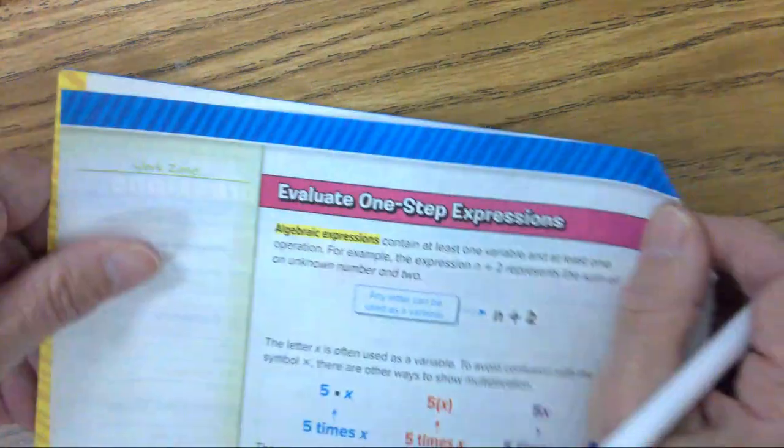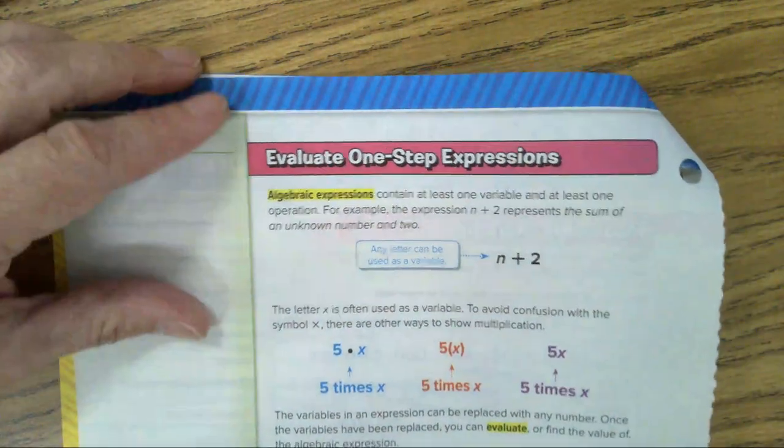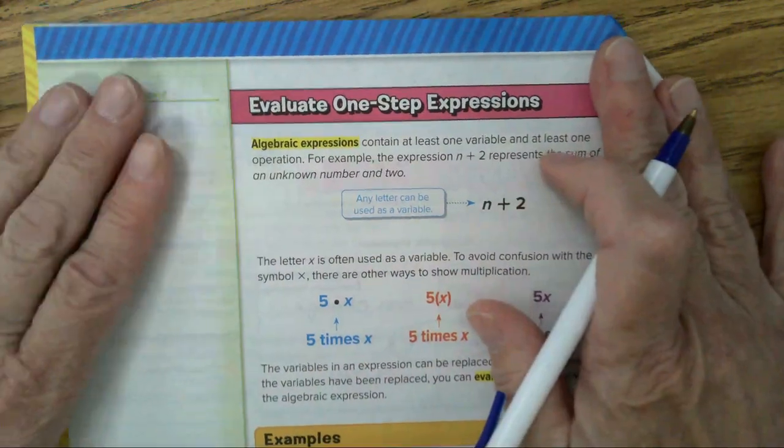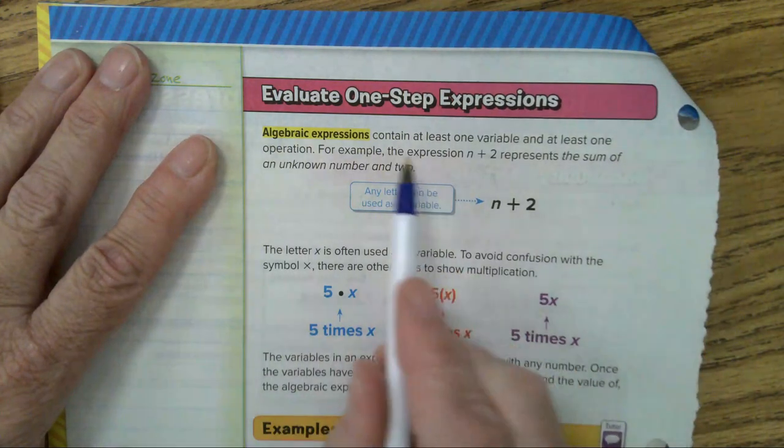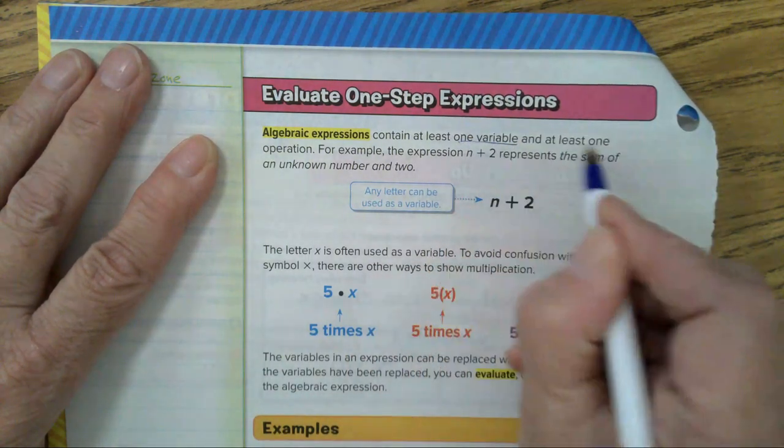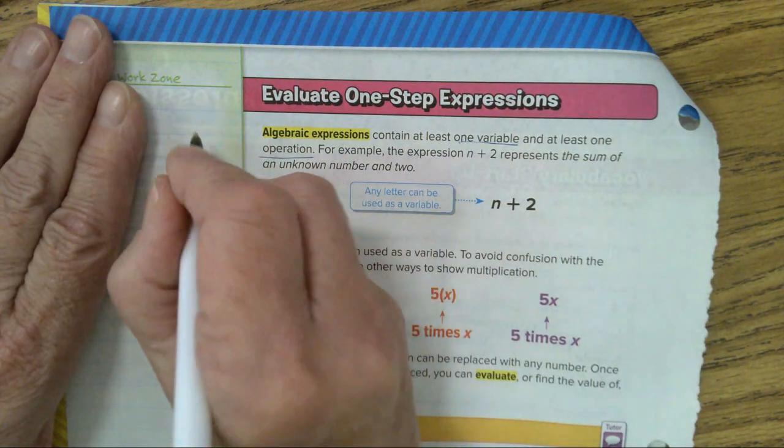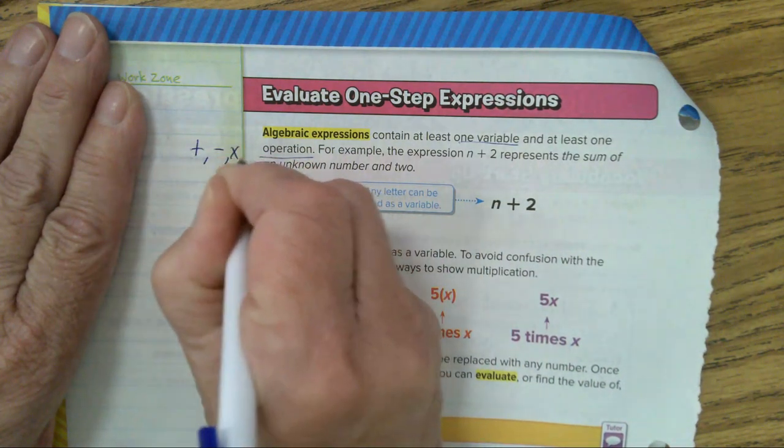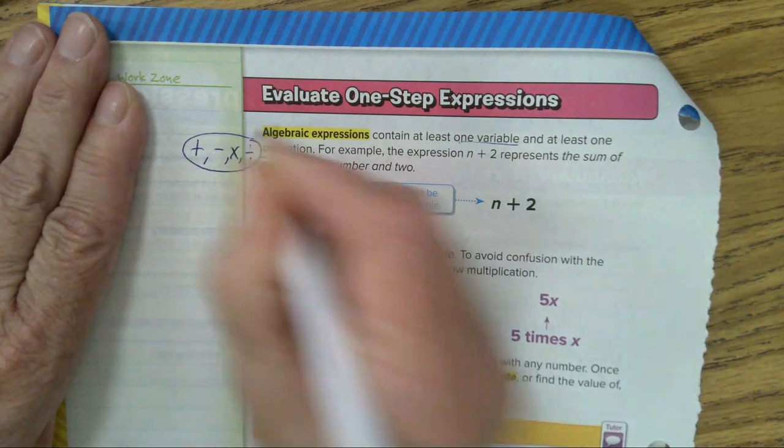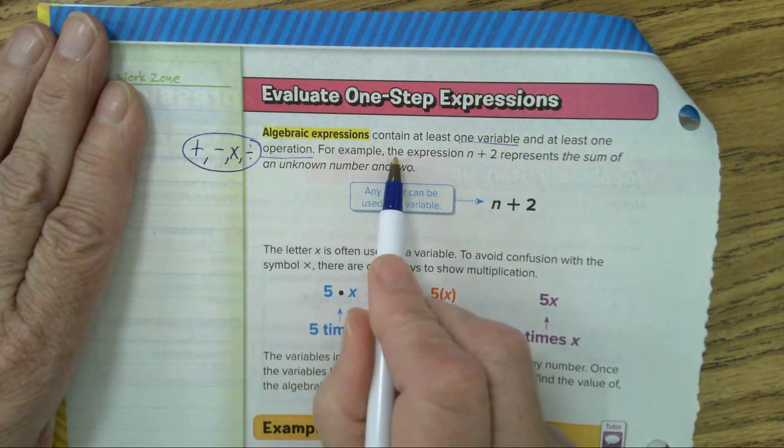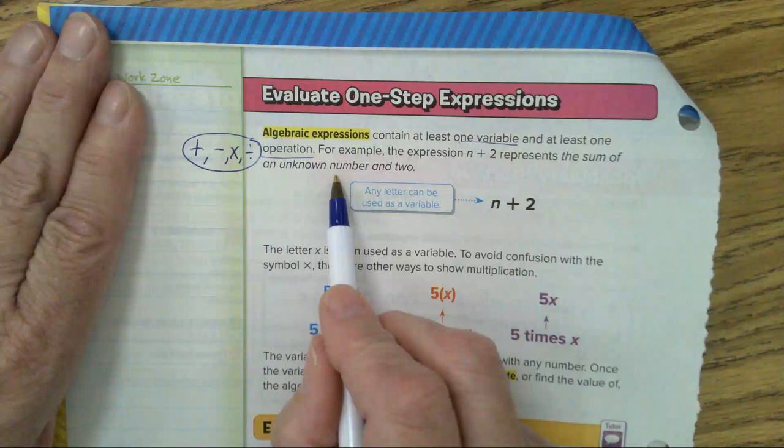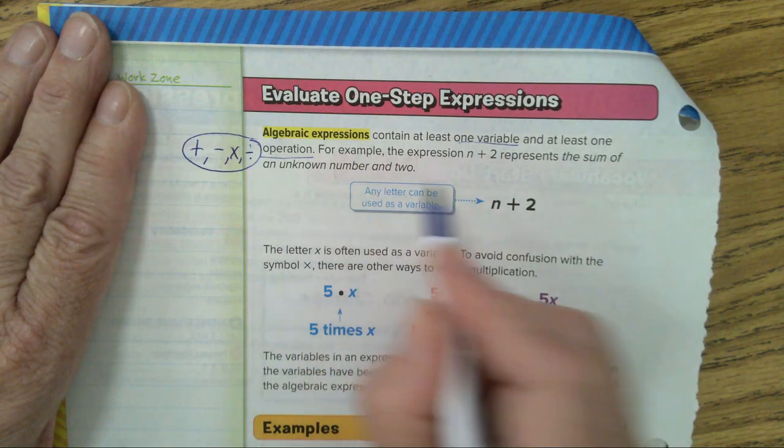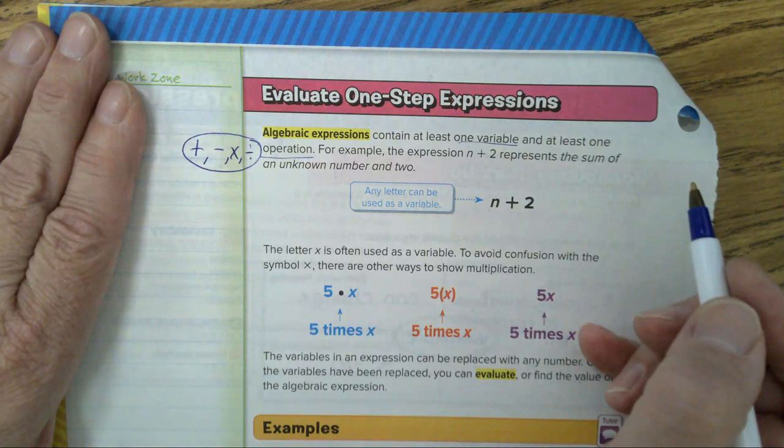Make sure you have this copied down. On page 450, evaluate a one-step expression. Algebraic expressions contain at least one variable and at least one operation. Operations are add, subtract, multiply, or divide. Those are our four mathematical operations. For example, the expression n plus two represents the sum of an unknown number and two. N represents the unknown number. Expressions do not have equal signs.